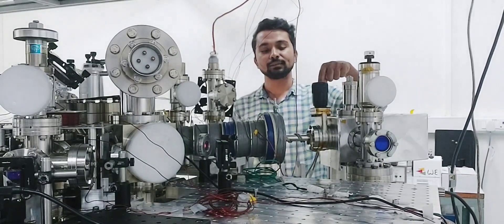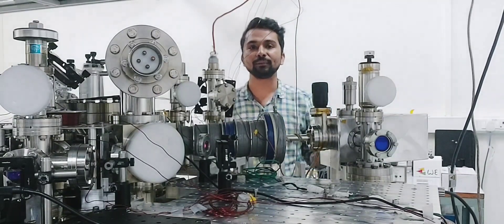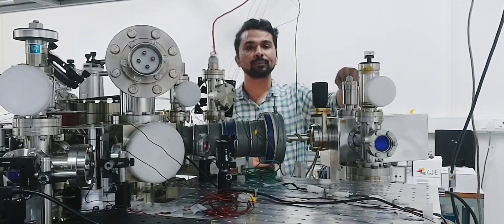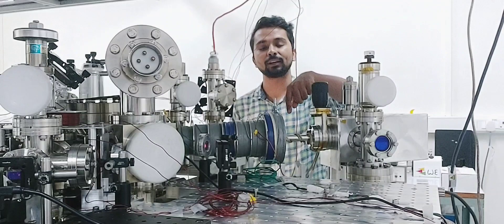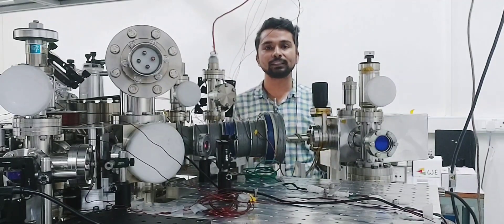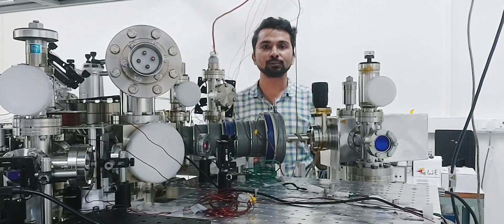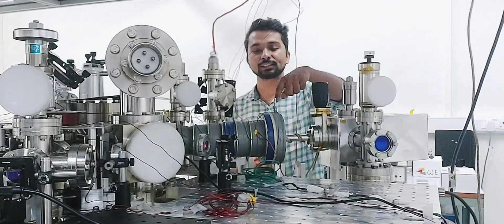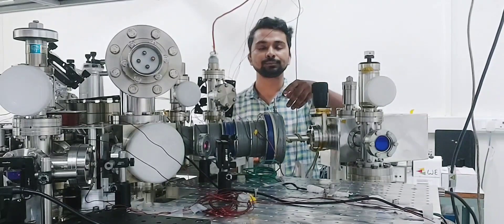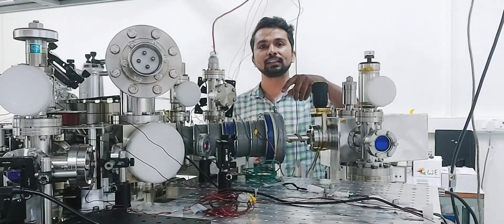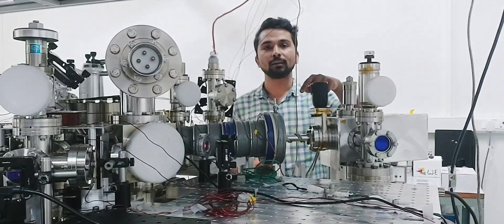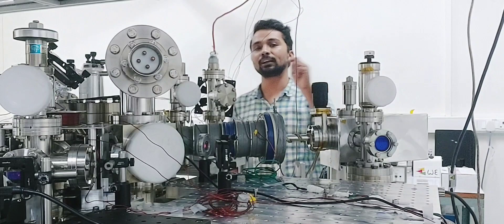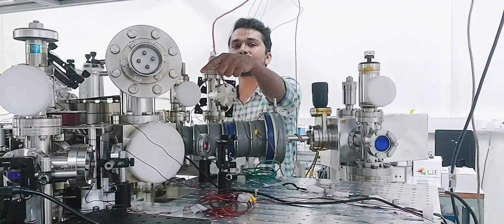This part of our vacuum chamber is the Zeeman slower section. This is the oven. Inside this oven, we have lithium atom in the metallic form. We heat this oven to around 320 degrees Celsius. Then, lithium vapor is formed. Those vapors then come from this direction. We shine laser opposite to the lithium vapor direction. Then, the velocity of the lithium atom gets reduced. As the velocity gets reduced because of the Doppler shift, this atom goes out of resonance and the slowdown process stops. To compensate that, we have this very big electromagnet. Using this electromagnet, we generate around 300 to 400 Gauss of field. Because of the Zeeman effect, the energy level of the lithium atom then gets shifted. And that Zeeman shift basically compensates the Doppler effect. And this slowdown process happens in this entire length. After this slowdown process, those atoms enter into this three-dimensional magneto-optical trap, where we trap those atoms.